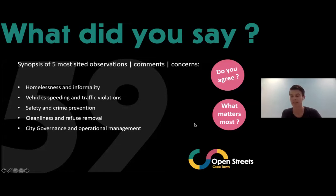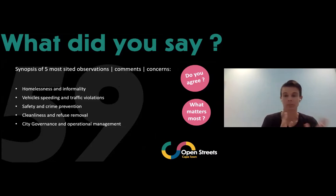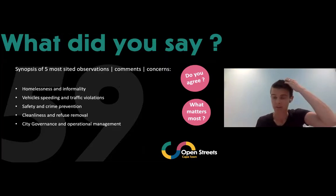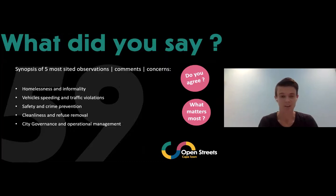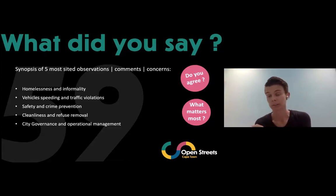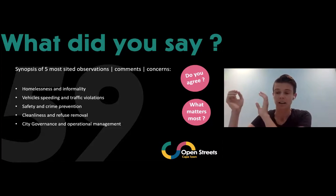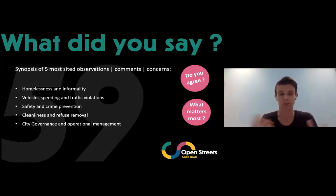Of approximately 250 comments received, these were the top five issues with creative and empathic solutions attached. The top issue, in no order of priority, is homelessness and informality — including informal trade, people seeking recycling opportunities and going through trash, people living on the street, and people occupying spaces like subways that have other intended uses. These are people taking opportunities that are neither accepted nor legal.